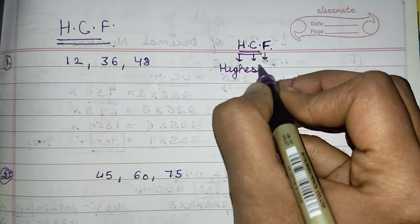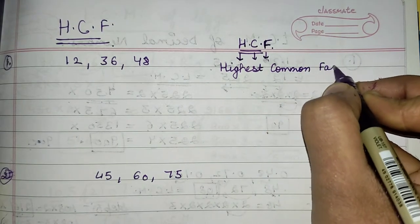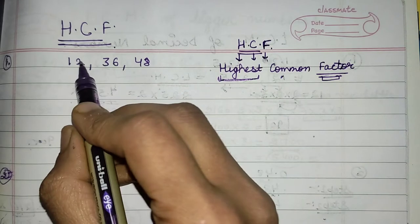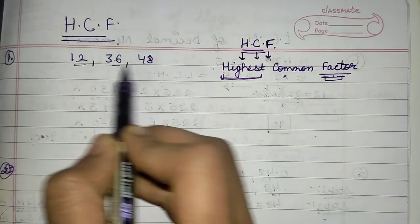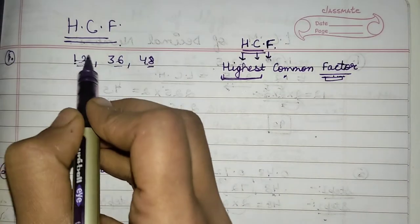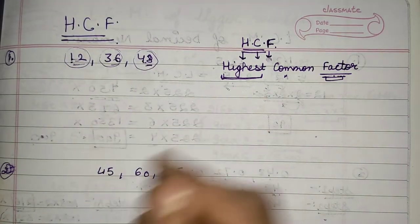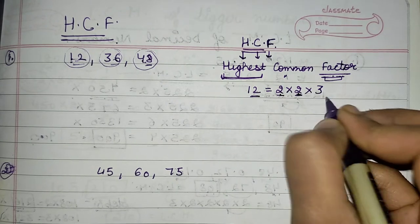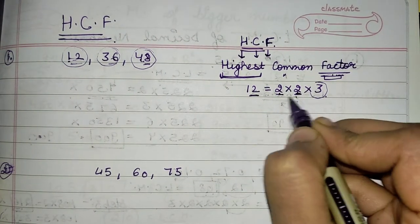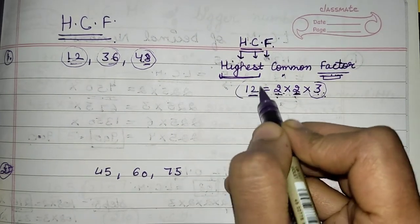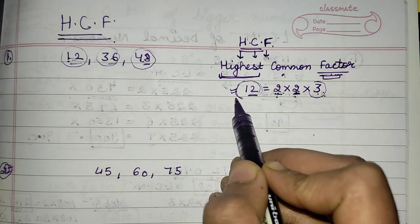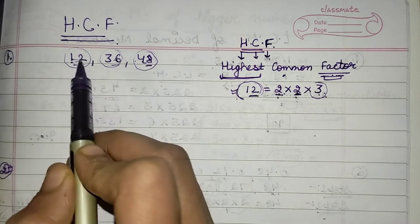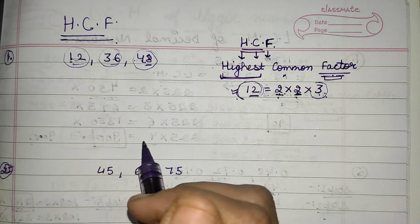HCF is highest common factor. It means this is the highest factor common for all the numbers — a factor which is going to divide each and every number, and each number will have that common factor. Factors are numbers like the factors of 12: 2×2=4, 4×3=12. So 2, 4, and 3 are factors of 12, meaning each of these numbers divides 12. For more than one number, HCF is that common value which divides all the given numbers.